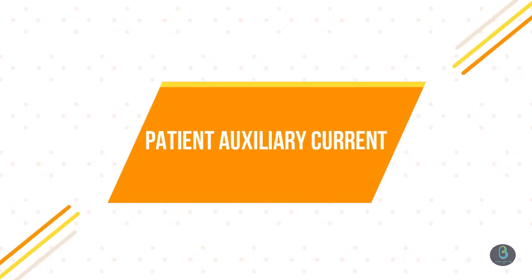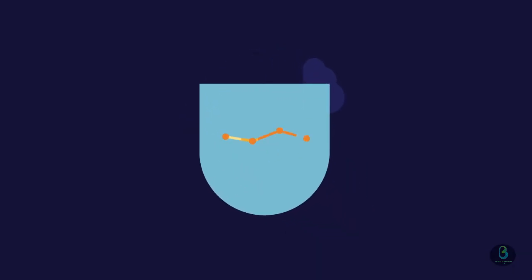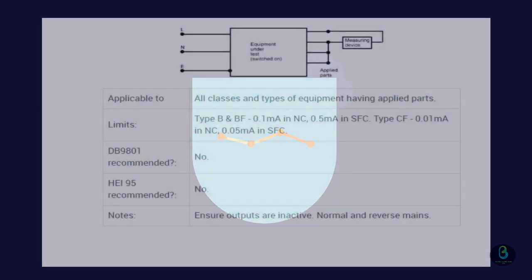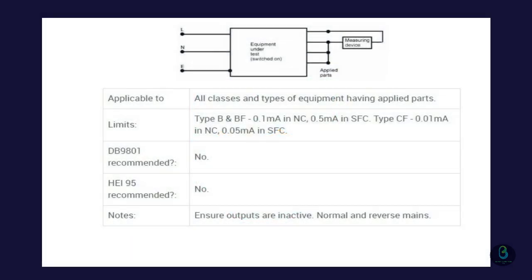Patient Auxiliary Current. Patient Auxiliary Current is measured between any single patient connection and all other patient connections of the same module or function connected together. Where all possible combinations are tested together with all possible single fault conditions, this yields an exceedingly large amount of data of questionable value.